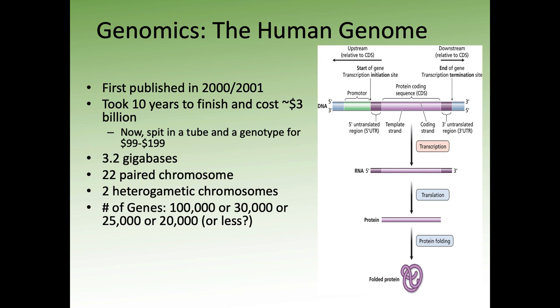You might wonder why the gene count keeps changing. As we learn techniques like transcriptomics and dig into function, we learn to redefine what we consider a gene. These early numbers were based on what people expected — the amount of complexity you'd need to produce a human being. What we found was that you could have far fewer genes if there were things like alternative splicing, where different exons are arranged into different sequences, leading to different proteins from the same gene.